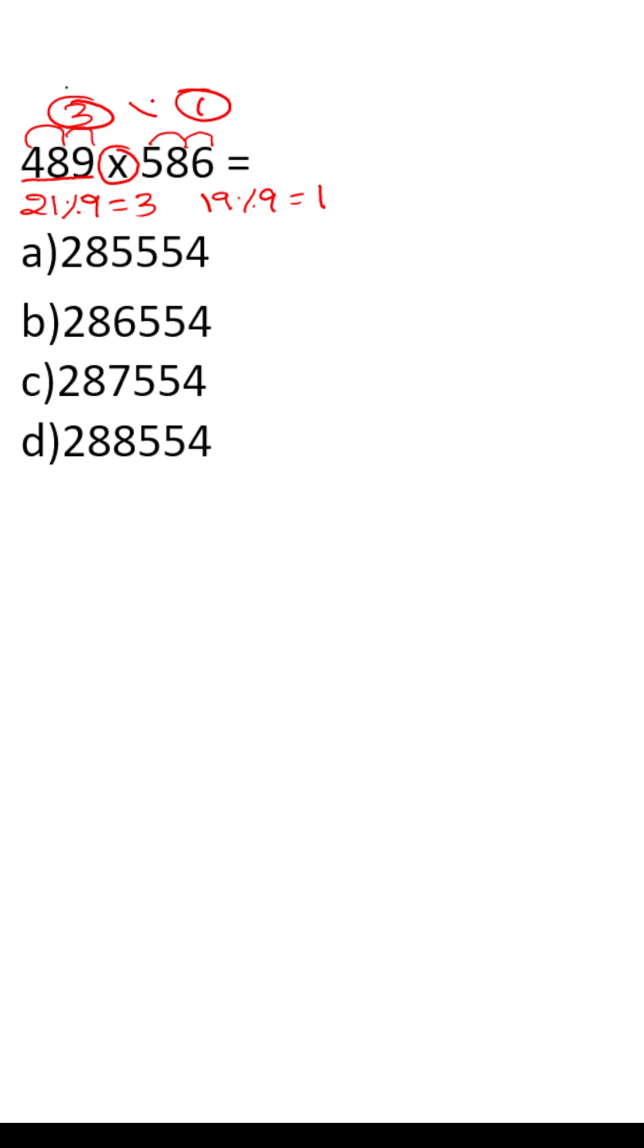Between the symbol is multiplication, so multiply them. 3 into 1 is equal to 3, which is the digit sum of the left hand side of the equation. Now calculate the digit sum for all these options. You will get option B as the answer.